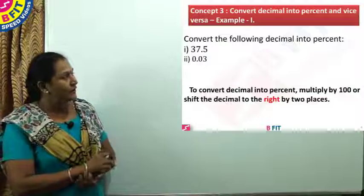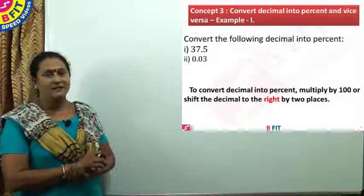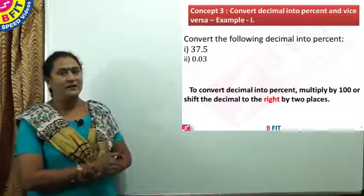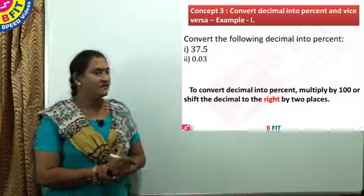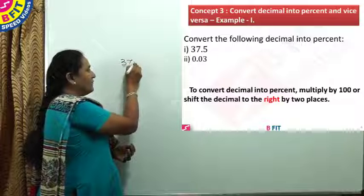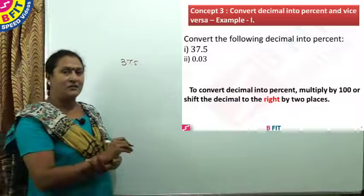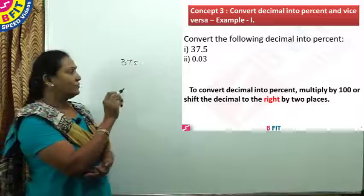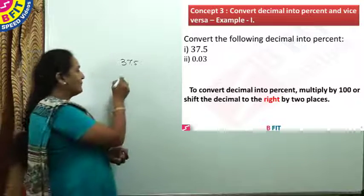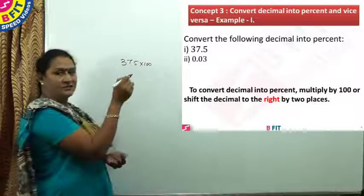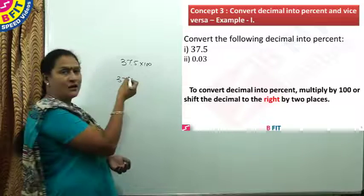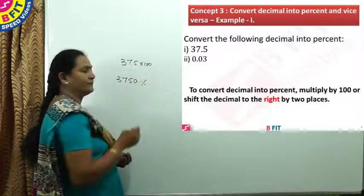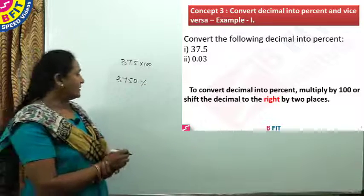The first example: convert the following decimals into percent. The questions are 37.5 and 0.03. We need to find the corresponding percentages. For 37.5, to find the percentage, multiply the value with 100. For a decimal, just shift the decimal two places to its right. Multiplying 37.5 by 100, placing the required digits, gives 3750 percent.